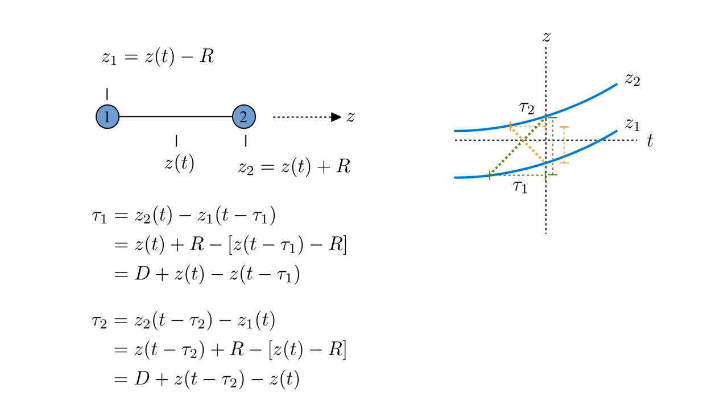At time T, part one will see the field produced by part two at a time tau-two in the past. The corresponding distance Z-two of T minus tau-two minus Z-one of T equals the time delay tau-two. Starting at a point on the Z-one curve, we travel back and up at forty-five degrees until we hit the Z-two curve. The horizontal offset is tau-two. The vertical offset is Z-two of T minus tau-two minus Z-one of T. And we find tau-two equals D plus Z of T minus tau-two minus Z of T.